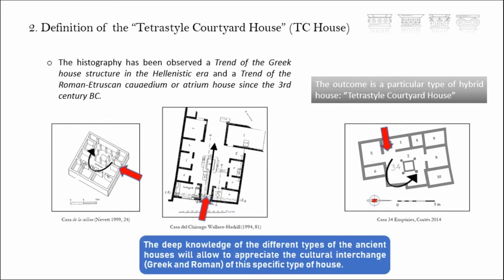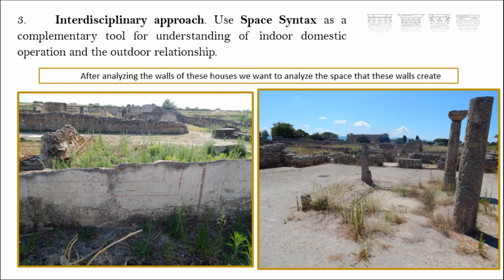The deep knowledge of the different types of ancient houses will allow us to undertake the cultural interchanges, in this case Greek and Roman, of this specific type of house. But first of all, this project is a Roman architectural project that analyzes all features from archaeological perspectives — a constructive, material and decorative study analyzing constructive techniques, planimetry, stratigraphic phases, materials, domestic materials, walls, and decoration. But this project wants to have the most possible interdisciplinary approach, and after analyzing the walls of these houses, we want to analyze the space that these walls create.